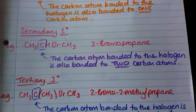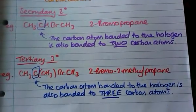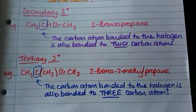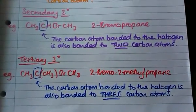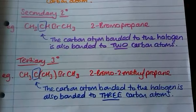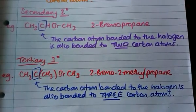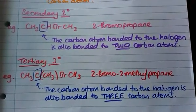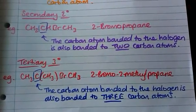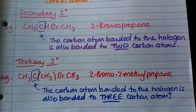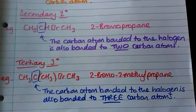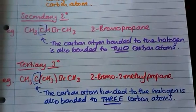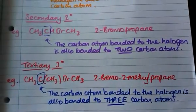And then in a tertiary haloalkane, the carbon atom that is bonded to the halogen is also bonded to three carbon atoms. So for example, here we have 2-bromo-2-methylpropane.